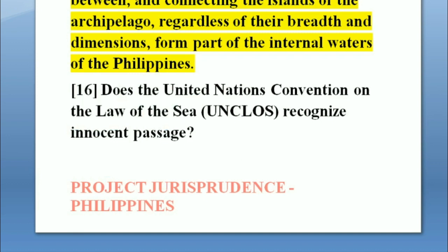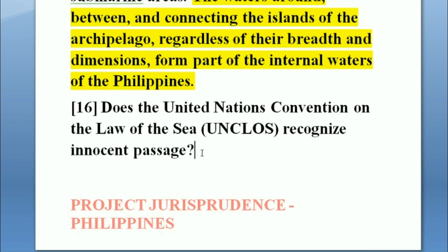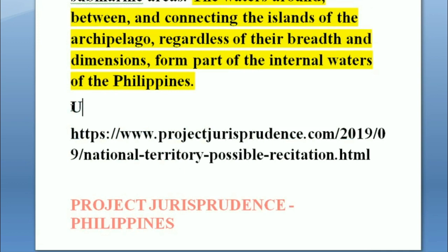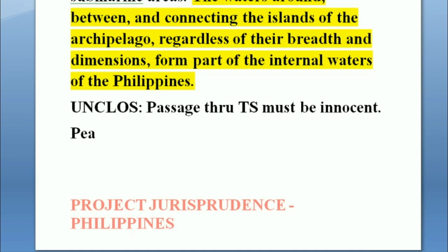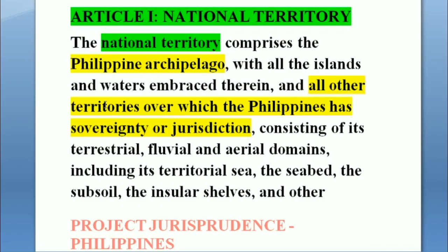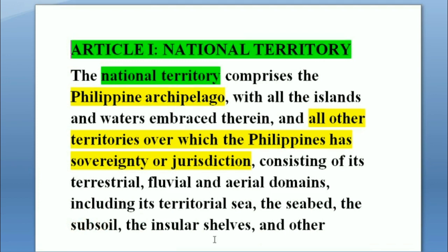Question number fifteen: does the Constitution allow innocent passage? The Constitution does not refer to innocent passage anywhere in its text, but it mentions territorial sea. Under UNCLOS, innocent passage is allowed through the territorial sea. There being no explicit prohibition under the Constitution, innocent passage through the territorial sea is allowed. If the question refers to internal waters, the prior discussion applies. Question number sixteen: does UNCLOS recognize innocent passage? Yes — under UNCLOS, innocent passage is allowed through the territorial waters of another state, but subject to restrictions. The passage must not be prejudicial to the peace, good order, or security of the coastal state, and activities such as weapons practice or fishing are not allowed, as defined under Article 19 of UNCLOS. These are possible recitation questions regarding Article 1 of the 1987 Constitution. Thank you for watching Project Jurisprudence.